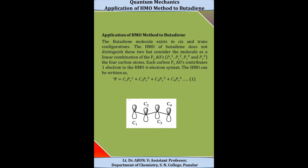We have to study how we can apply the HMO method to butadiene. The butadiene molecule exists in two configurations: cis-configuration and trans-configuration. However, the HMO theory does not distinguish these two conformations of butadiene. Instead, the HMO considers the molecule as a linear combination of the pz atomic orbitals of the four carbon atoms. Each carbon pz atomic orbital contributes one electron to the Hückel molecular orbital pi electron system.